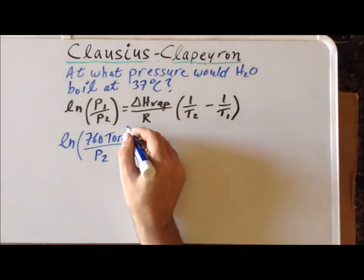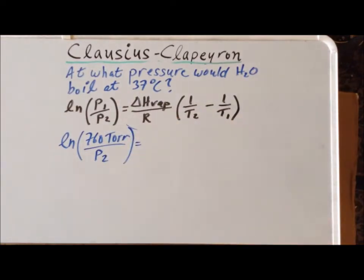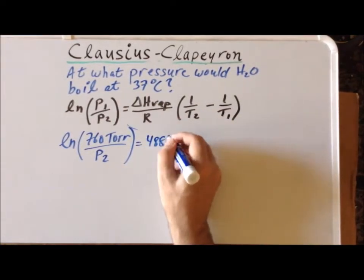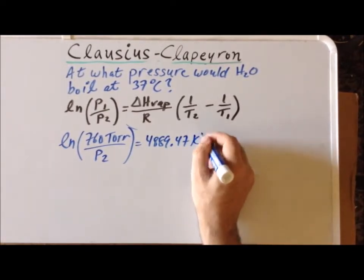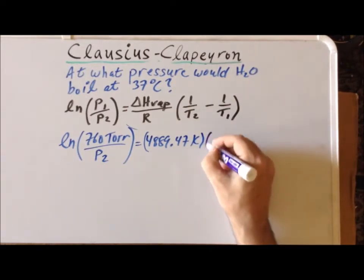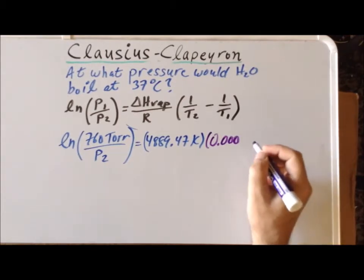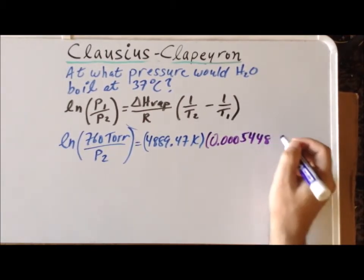We know that this ratio of the enthalpy of vaporization to R is 4,889.47 Kelvin. We also know that this expression in here is equal to 0.0005448 inverse Kelvin.